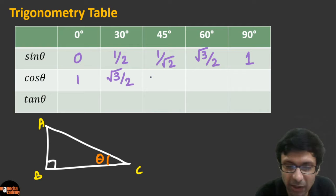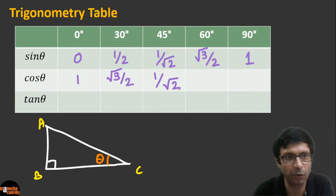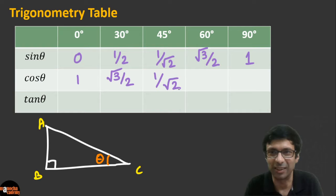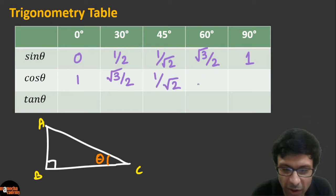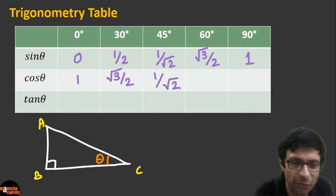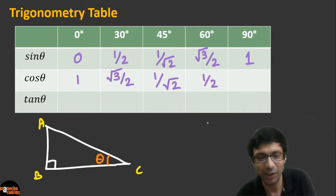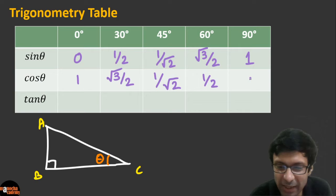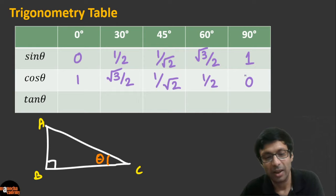The cosine row is easy to fill — it's just the reverse of the sine table. Cos 0° = 1, cos 30° = √3/2, cos 45° = 1/√2, cos 60° = 1/2, cos 90° = 0. It's like taking a mirror image of the sine row.